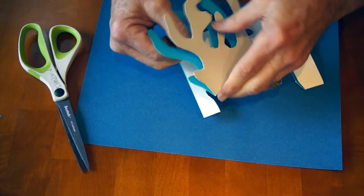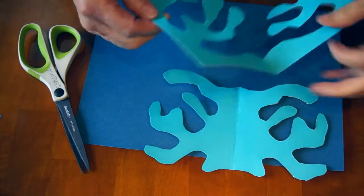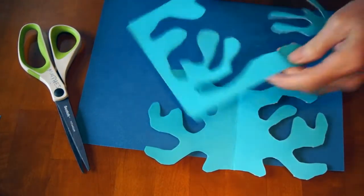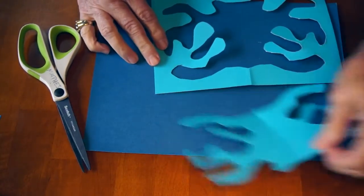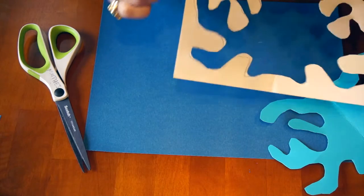Alright, so now what you're going to have is two shapes. This one and this one. You need both shapes for your paper. And if you accidentally cut off, we'll just tape it on the back side.